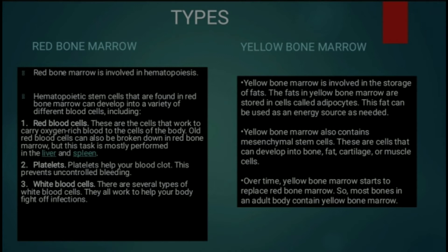RBCs oxygen-rich blood carry karte hain aur poori body ke cells mein distribute kar dete hain. Old red blood cells red bone marrow mein broken down ho jaate hain, aur yeh process hamaari liver aur spleen mein perform hota hai. Platelets hamare body mein blood clotting ka kaam karte hain aur uncontrolled bleeding ko prevent karte hain. WBCs yaani white blood cells bahut saare types ke hote hain aur ye hamaari body mein infection se ladne mein help karte hain.